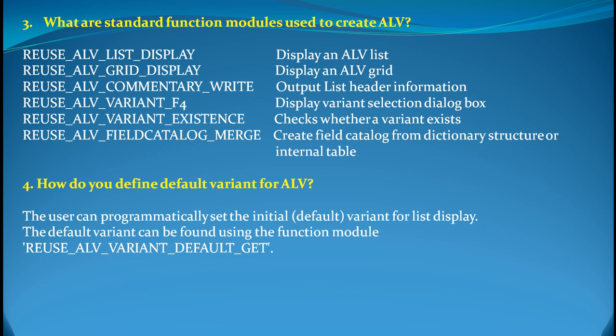The fourth question is: how do you define a default variant for ALV? The user can programmatically set the initial variant for any list display, and the default variant can be found using the function module REUSE_ALV_VARIANT_DEFAULT_GET. So this is the function module used in order to define a default variant for ALV.